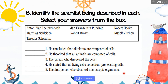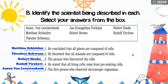Next activity: identify the scientists being described. The choices are Anton van Leeuwenhoek, Matthias Schleiden, Theodore Swann, Robert Brown, Robert Hooke, and Rudolf Virchow. Answers: Matthias Schleiden concluded that all plants are composed of cells. Theodore Swann theorized that all animals are composed of cells. Robert Hooke discovered the cells. Rudolf Virchow stated that all living cells come from pre-existing cells. Anton van Leeuwenhoek was the first person to observe a microscopic organism.